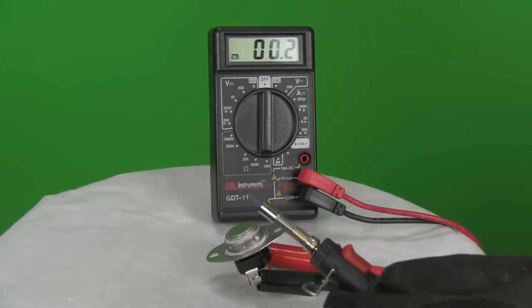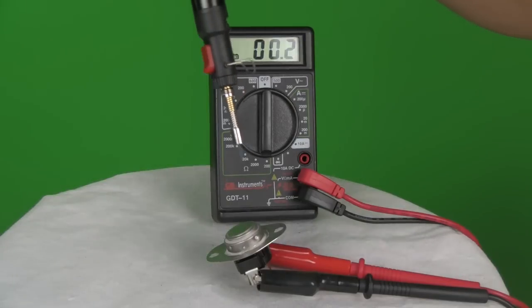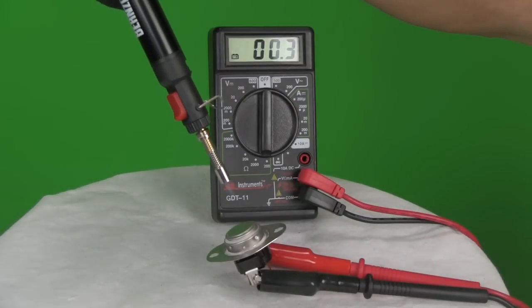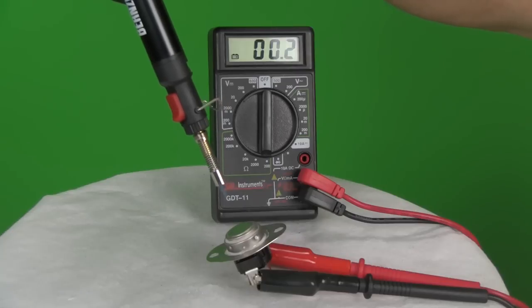This is a dryer's cycling thermostat. It is normally closed and opens when it reaches a particular temperature, breaking contact to the heat source. Once it cools down, it closes again allowing more heat to be generated.